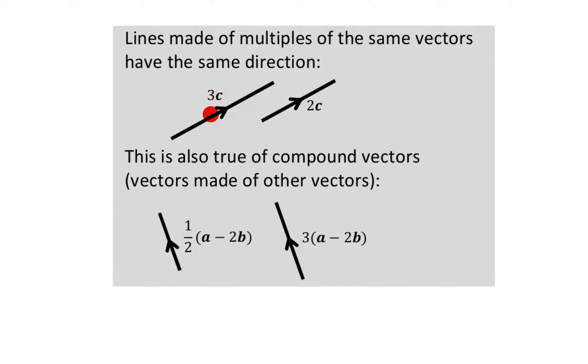So if I've got three of vector c, it doesn't make a difference to the direction, because if you have a c and then another c and then another c, it's just going to make a longer line, but it's not going to change the direction.